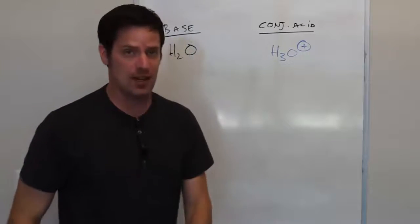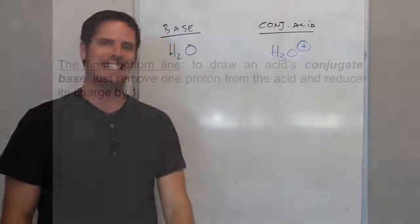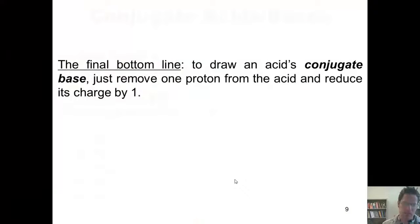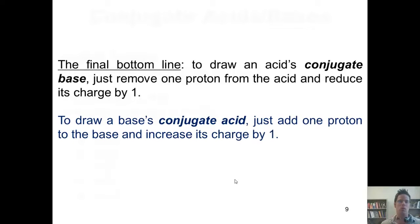So here's the final bottom line. To draw an acid's conjugate base, just remove one proton from the acid and reduce its charge by one. To draw a base's conjugate acid, just add one proton to the base and increase its charge by one. Got it? I hope so.